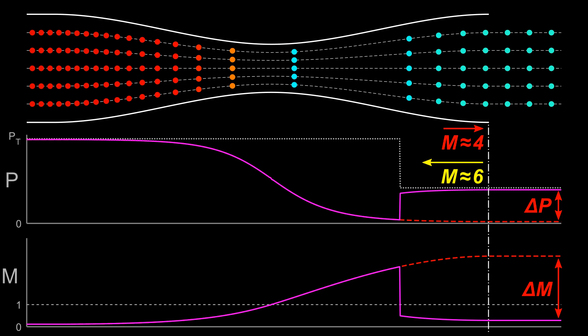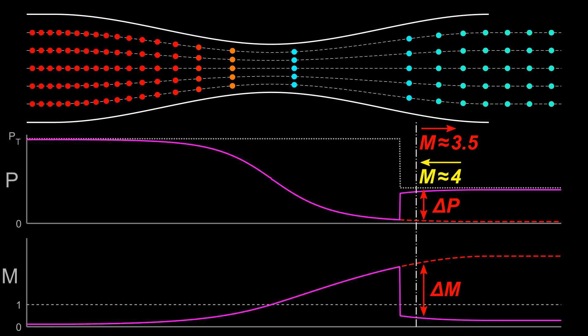While pressure information can't transmit up a supersonic flow via traditional particle collisions, normal shocks can propagate up supersonic flows. This Mach 6 shock would move up the nozzle and the pressure immediately before the shock would increase as the amount of supersonic expansion prior to the shock has decreased.